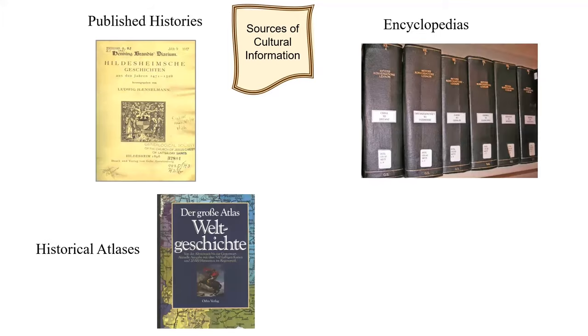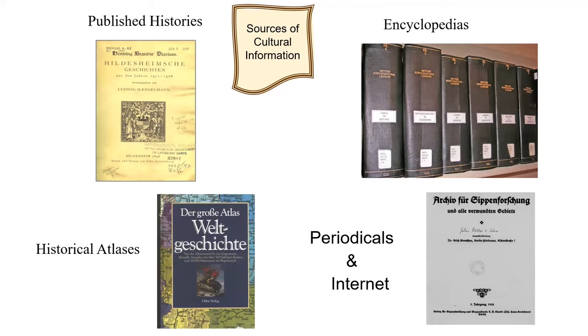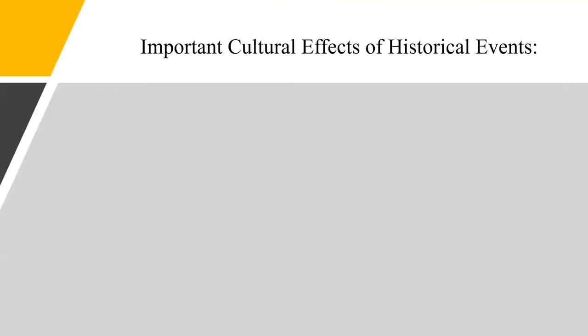The following are some resources that can provide not only historical facts but also cultural information. They include published histories, historical atlases, encyclopedias, periodicals, and the internet. The following are some of the major historical events discussed in webinar number four. All of these had a cultural impact on the people and their records, some more than others.